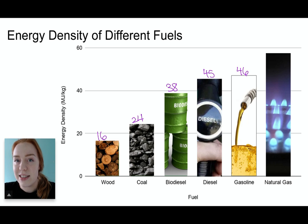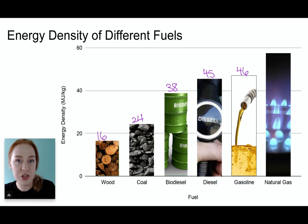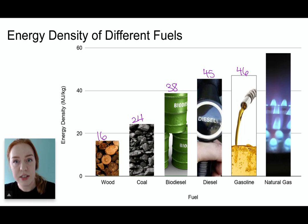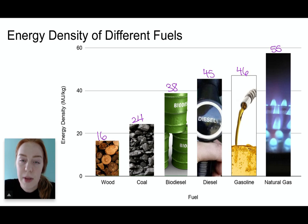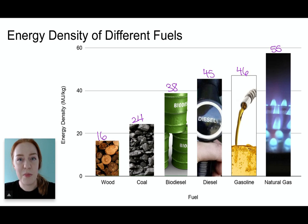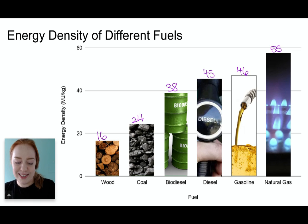The highest end of conventional fuels is natural gas, which we use in our homes for gas stoves, furnaces, and hot water heaters, as well as to make electricity. Natural gas has 55 megajoules per kilogram. Now this seems good when you compare it to wood, but let's take a look at something that is just a little bit better.